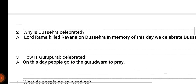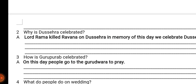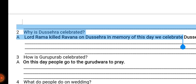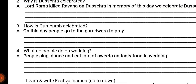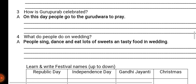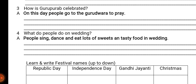3. How is Guru Purab celebrated? On this day, people go to the Gurudwara to pray – Sikh log Guru Purab ke din Gurudwara mein prayer karne jaate hain. 4. What do people do on a wedding? People sing, dance and eat lots of sweets and tasty food at weddings – marriage ke din log gaana karte hain, dance karte hain aur saari sweets aur tasty food khaate hain.